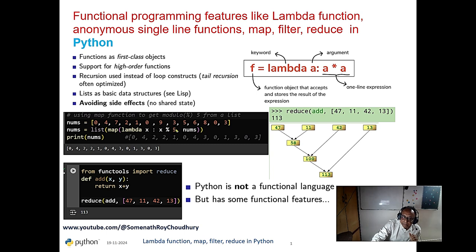Like map is useful with lambda. And modulo 5, whenever you pass on this list, the modulo remainder will come.